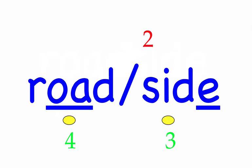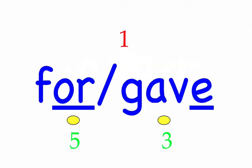Row three. Forgave. He forgave the man. First syllable: for, two sounds, F-or. Second syllable: gave, three sounds, G-A-V. Forgave — mark the word.